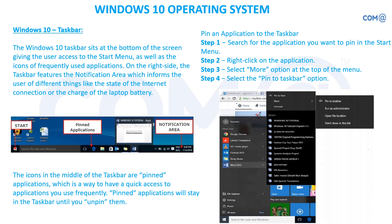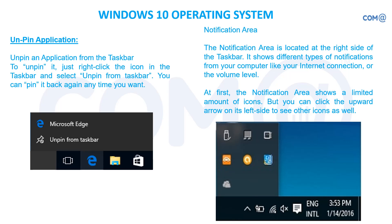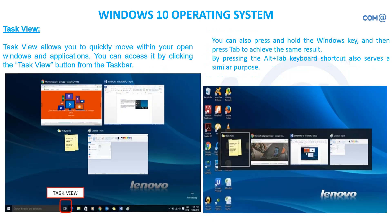The Windows 10 taskbar shows the start menu, pinned applications, and notification area. You can right-click and unpin an application to remove it from the taskbar. Using the Task View icon, you can see all open tasks lined up in your system. Alternatively, use Alt + Tab to switch between applications — the choice is yours.